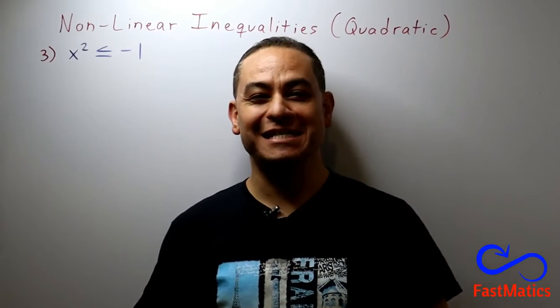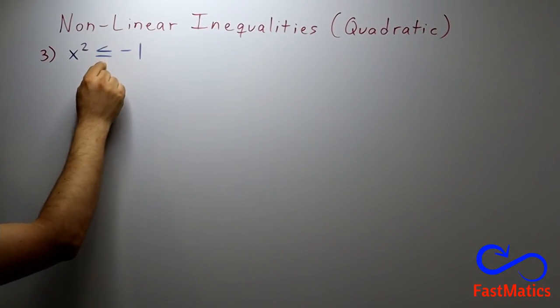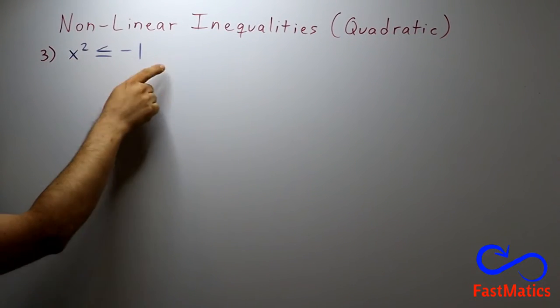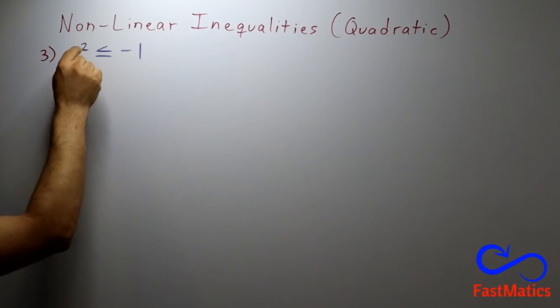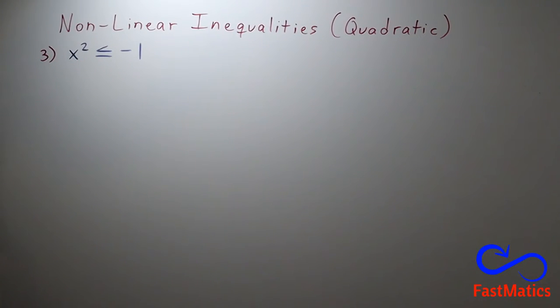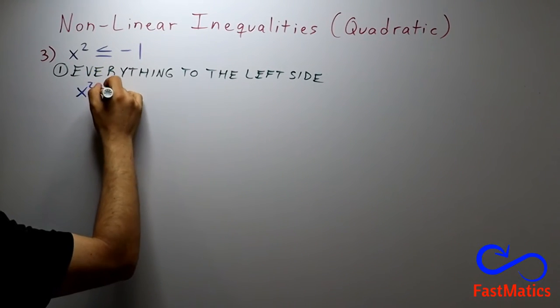Follow me, please. First of all, we need to identify that we have an inequality and that this inequality is nonlinear, is specifically quadratic inequality. So, first step, we pass everything to the left side.